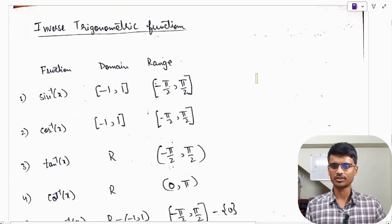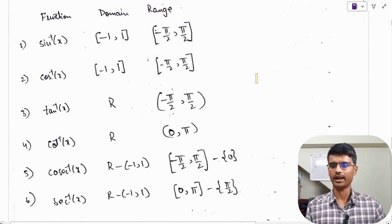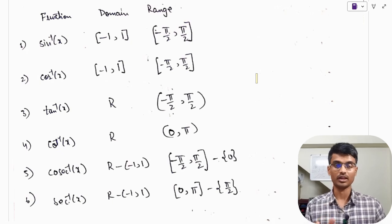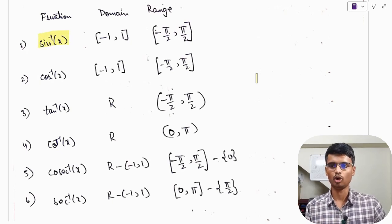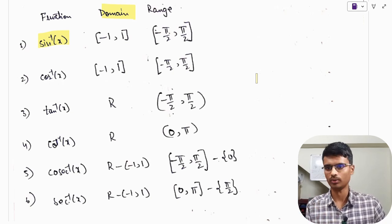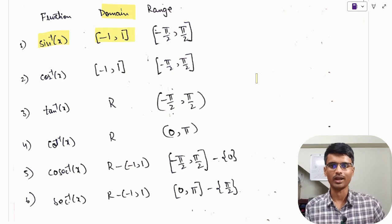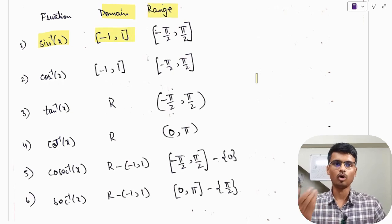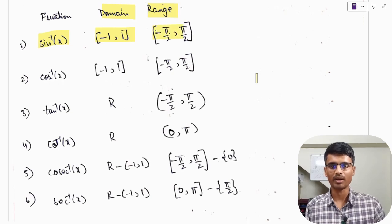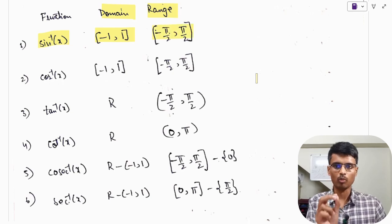Moving on to inverse trigonometry. Domain and range are very important here, and as you all know, there is a fixed MCQ question from this topic in your board exams. For sin⁻¹x: domain is [−1, 1] and range is [−π/2, +π/2] — closed brackets. For cos⁻¹x: domain is [−1, 1] and range is [0, π] — closed brackets.